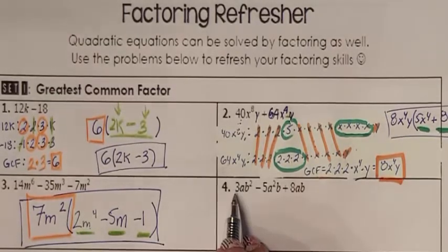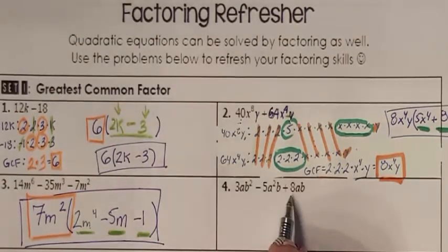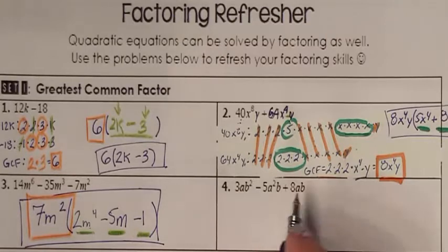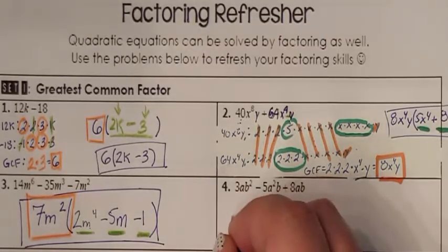Last one. Three, negative five, and eight. No number will divide all three of those. So I have no number GCF. I see they all have A's. The most amount of A's they have is one. So my GCF is an A.